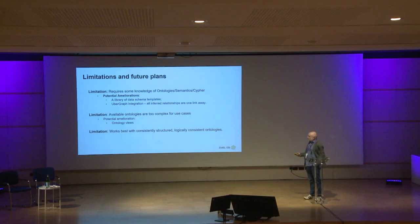We're also looking at integrating Ubergraph, which makes complex OWL queries easy by making all inferred relationships from the ontology just one link away. Another limitation is that available ontologies are often too complicated for a particular use case — an inevitable consequence of how ontologies develop with different funding and different stakeholders at different times. The way forward is probably not to simplify the ontologies themselves, but to find a way to generate simple views that work for people.